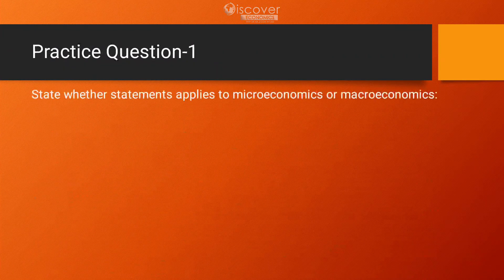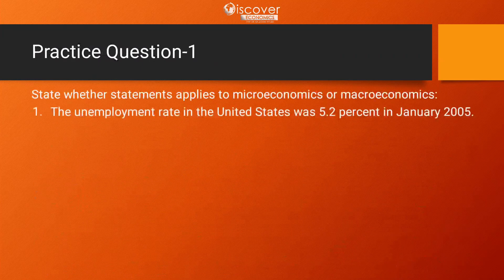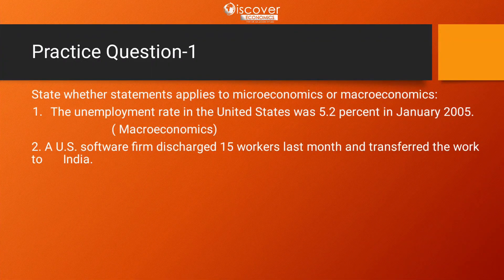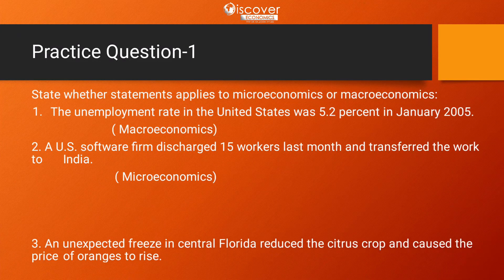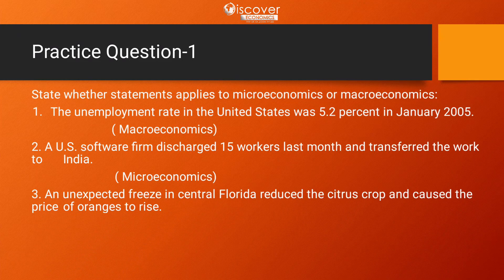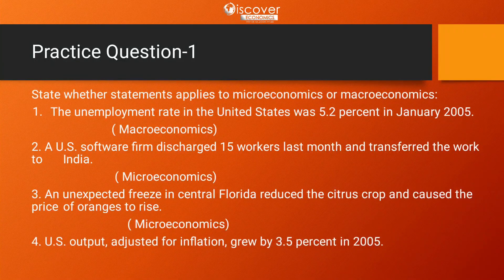Let's do some practice questions to see whether these are microeconomic or macroeconomic. The unemployment rate in the United States was 5.2% in January 2005 — this falls under macroeconomics. A U.S. software firm laid off 15 workers last month and transferred the work to India — this is microeconomics, because we are talking about a single U.S. software firm. An unexpected freeze in Central Florida is also a microeconomic question. U.S. output adjusted for inflation is a macroeconomic question.